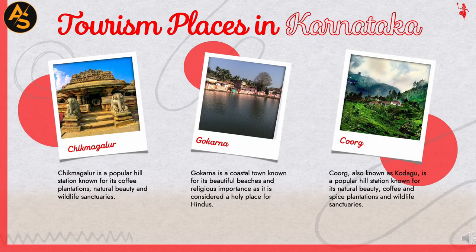Some other tourism places in Karnataka are Chikmagalur, Gokarna, and Coorg. Chikmagalur is a popular hill station known for its coffee plantations, natural beauty, and wildlife sanctuaries. Gokarna is a coastal town known for its beautiful beaches and religious importance as a holy place for Hindus. Coorg, also known as Kodagu, is a popular hill station known for its natural beauty, coffee and spice plantations, and wildlife sanctuaries.